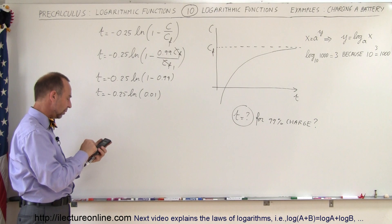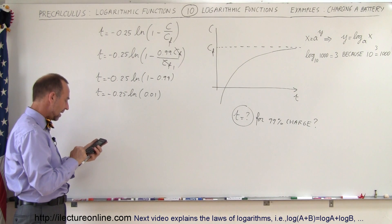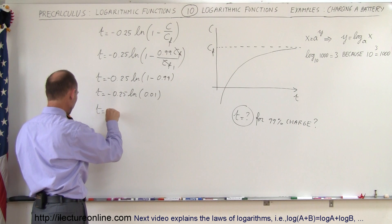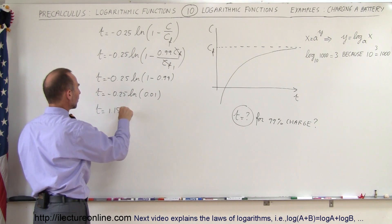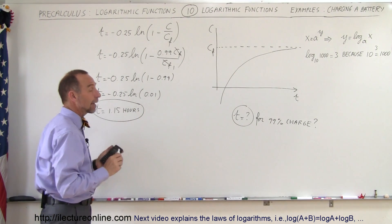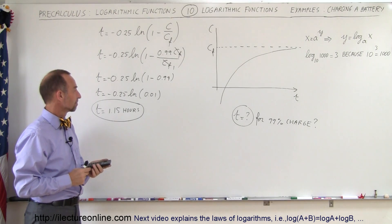The natural log of 0.01, multiply that times -0.25, and we get a total time of 1.15 hours. That is how we calculate the time it takes to charge a battery. Thank you.